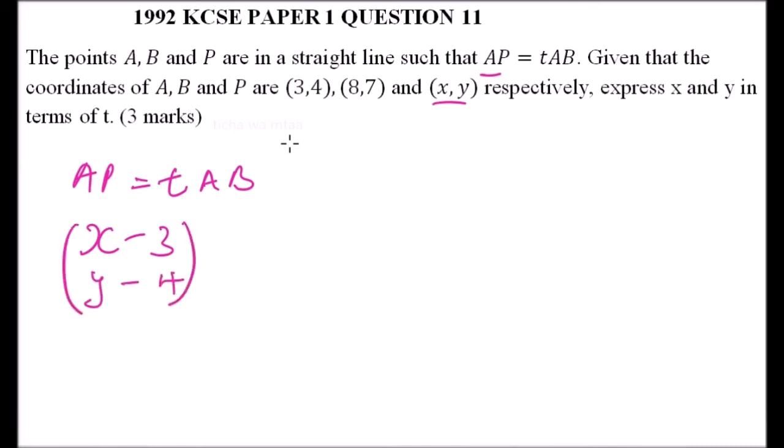Vector AP should be equal to t times vector AB. Our AB is 8 minus 3 and 7 minus 4.